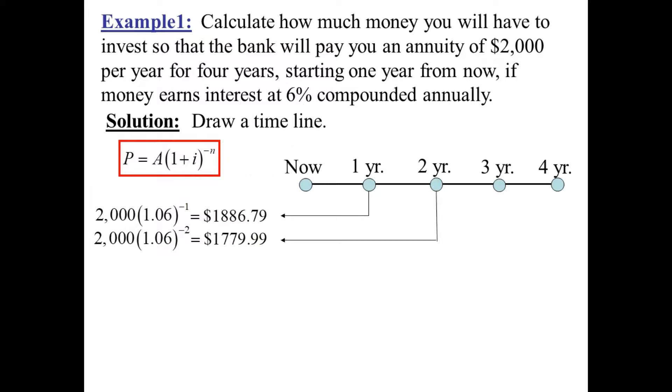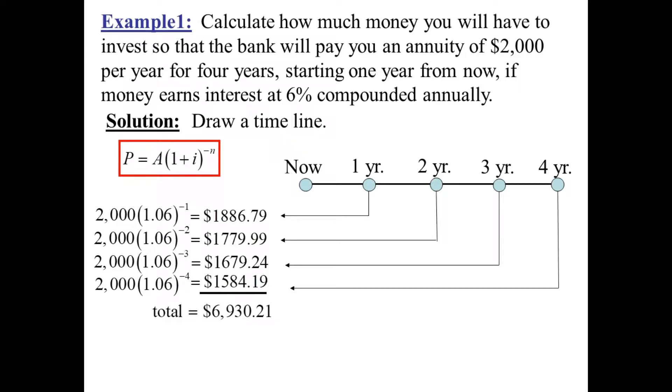And similarly for the third one, n is now 3 and we get that number. And similarly for the fourth one, 2,000 times 1.06 to the negative 4 on a calculator is $1,584.19. Draw a line and this is how much money one has to invest now to generate these four payments of $2,000 each.